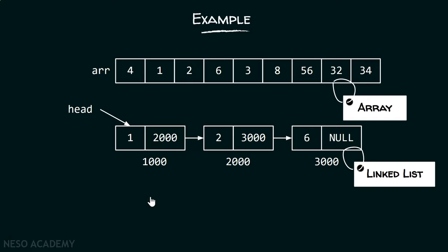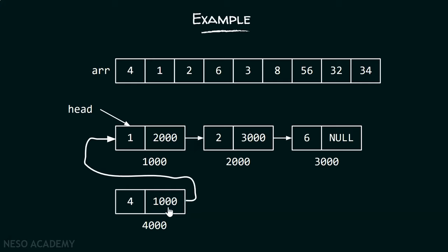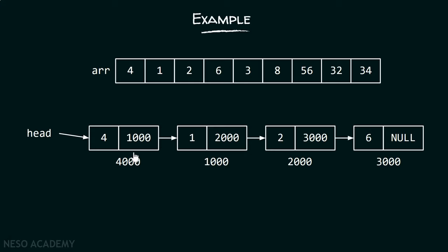Now let's say we want to add a particular element at the beginning of the linked list. We store the address of the first existing node in the new node — let's replace it with 1000. By adding this address, the new node points to that location and is now linked to the previous first node. Then we simply change the head pointer to point to this new node. Previously the head pointer was pointing to the old first node; now it points to the new node. This new node has been added at the beginning of the list. Is this operation tedious? Not at all — this data structure is much more efficient at adding data at the beginning compared to the array.